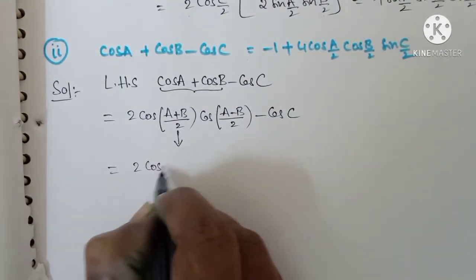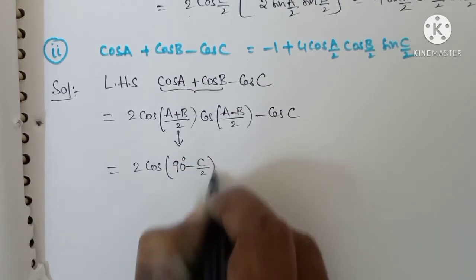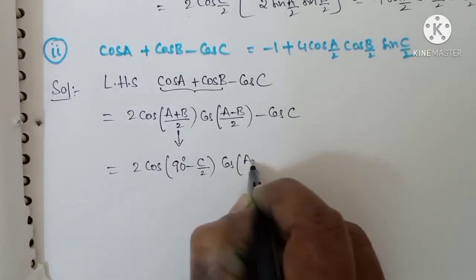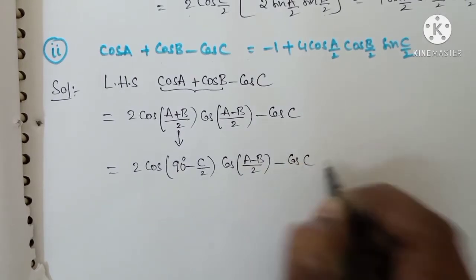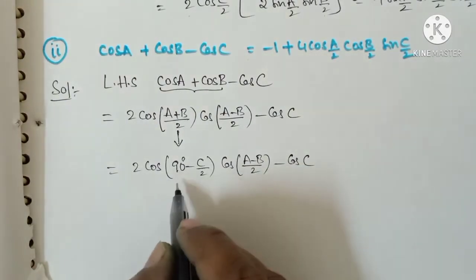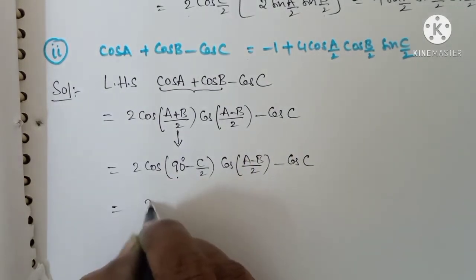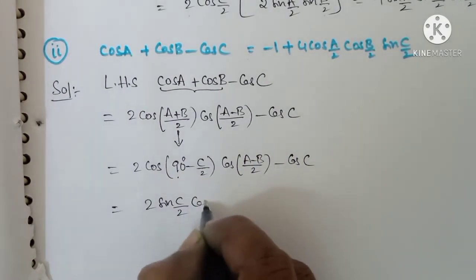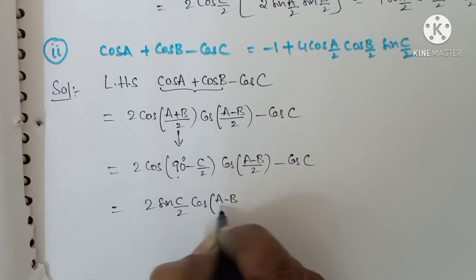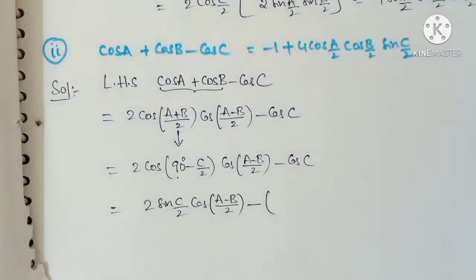Since (A+B)/2 equals 90 minus C/2, we substitute. For 90 degrees, cos changes to sin. So we get 2 sin(C/2) cos((A-B)/2) minus cos C. Now cos C can be written using the formula. We have 2 sin(C/2) cos((A-B)/2) minus cos C.